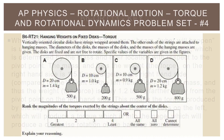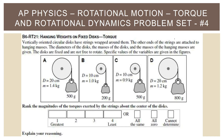Moving on — we'll take a little respite because this one is a little simpler. B6RT21: hanging weights on fixed disks, torque. Vertically oriented circular disks have strings wrapped around them; the other ends are attached to hanging masses. The diameters of the disks, masses of the disks, and masses of the hanging masses are given. The disks are fixed and not free to rotate. Rank the magnitudes of the torques exerted by the strings about the center of the disks and explain your reasoning.